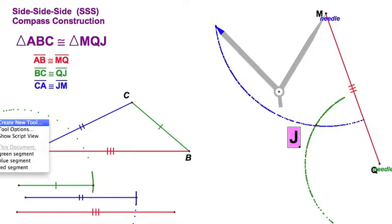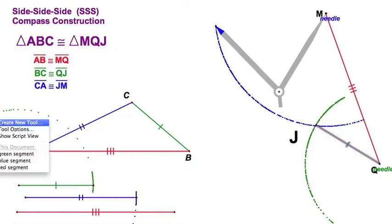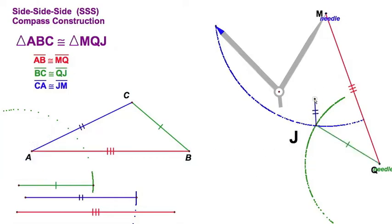Take your straight edge and we're going to draw the segment right there — that's your segment QJ. Then we'll draw the medium segment, we'll draw segment JM like that. And there goes your construction — you've got another pair of congruent triangles.